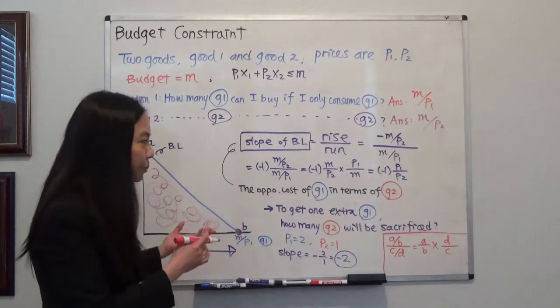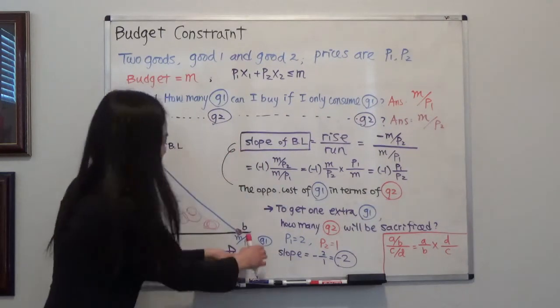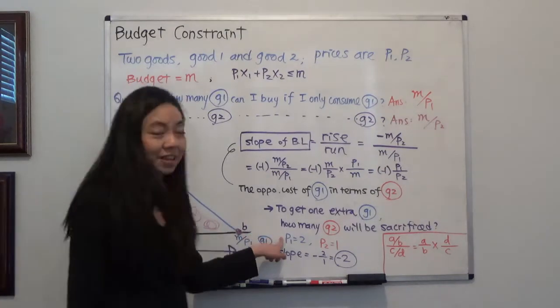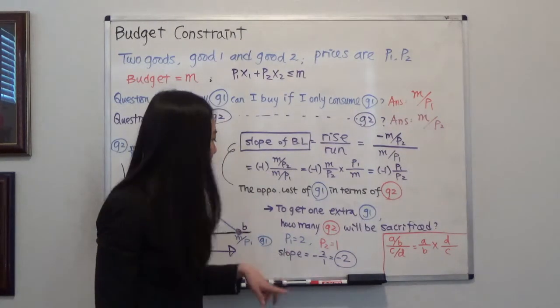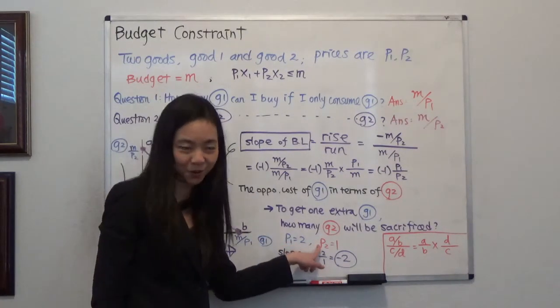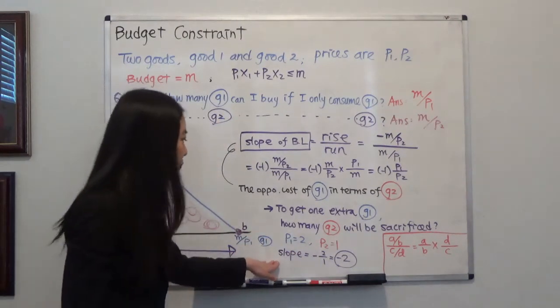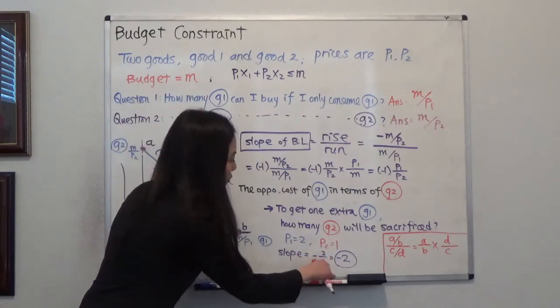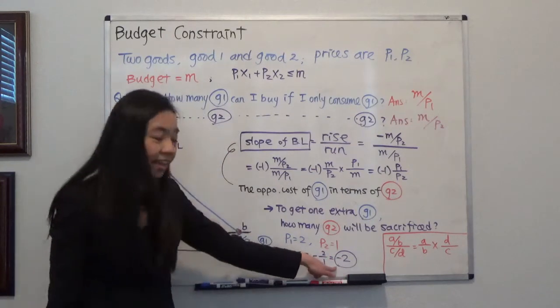For example, going back to our apple and orange example. Suppose this is apple and that's oranges. The price of an apple is $2. The price of an orange is $1. Then the slope of the budget line will be negative P1 over P2. That will be 2 over 1 and that gives you negative 2.